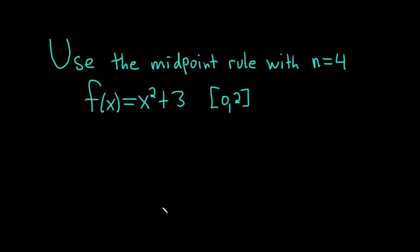Hello, in this problem we're being asked to use the midpoint rule with n equals 4 to approximate the area under the graph of this function f of x equals x squared plus 3 from 0 to 2.